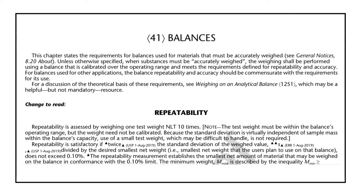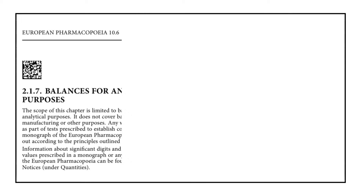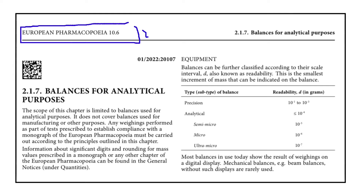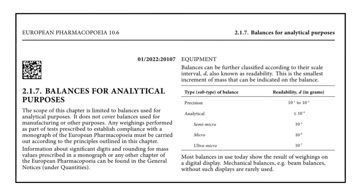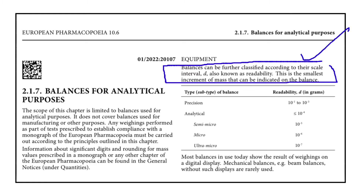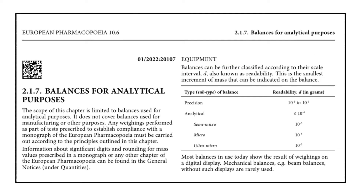The answer is: classification of balances is given in the European Pharmacopoeia chapter number 2.1.7. As per European Pharmacopoeia chapter 2.1.7, balances are classified based on readability. Readability is also called the scale interval.